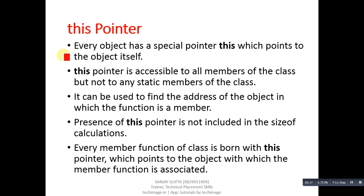Coming on to this pointer, the first point says every object has a special pointer called 'this' which points to the object itself. Second point says this pointer is accessible to all members of the class but not to any static members of the class.